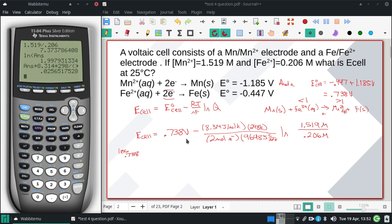I didn't include the negative sign, so: 0.738 minus that answer gives E_cell = 0.712 V.